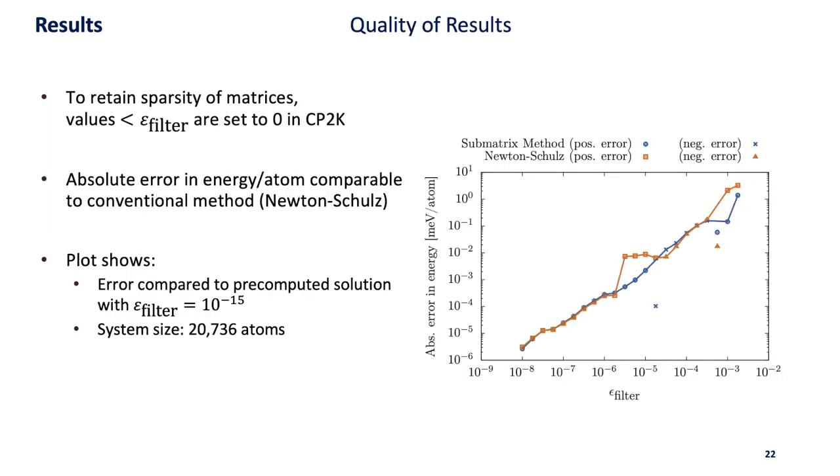First I want to share the quality of results because the submatrix method is of course an additional approximation. One important parameter in CP2K is the epsilon filter argument which keeps the matrices sparse by setting all values below this epsilon filter to zero. The quality of results heavily relies on this argument.